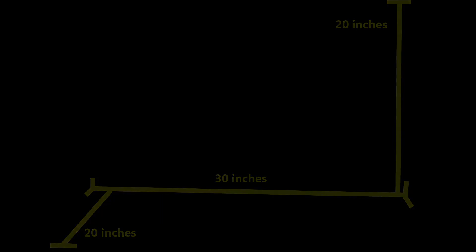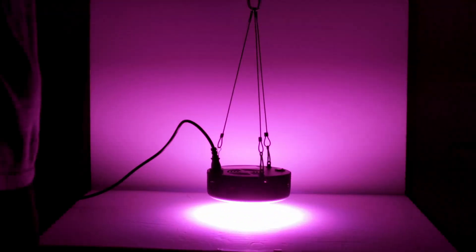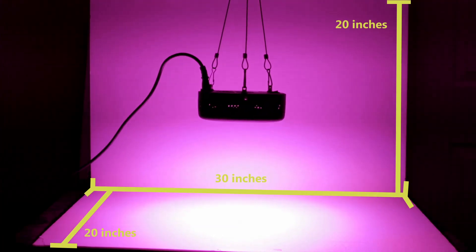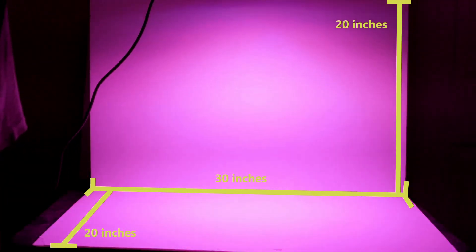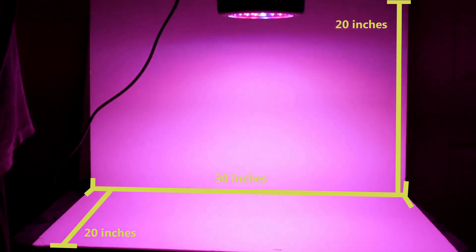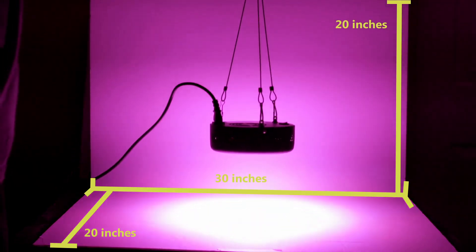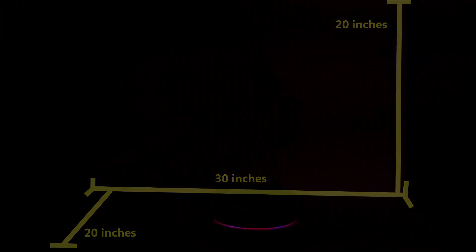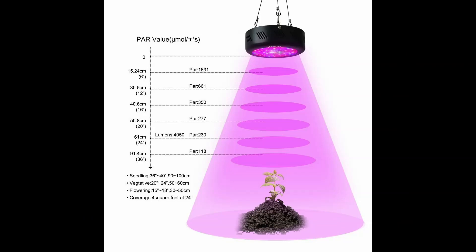I think it's pretty impressive that it's able to do that even though it has such a small form factor, and it allows you to add more lights to a small room if you needed more intensity. Here it is again at a much higher exposure just so you can see the footprint a little better. Here are the recommended heights to hang the light at based on the life cycle stage that your plant is in.